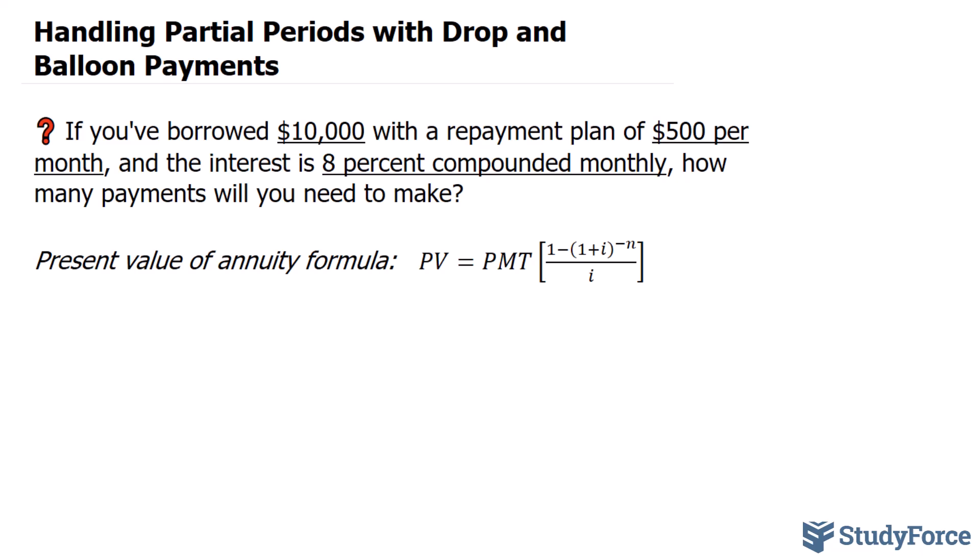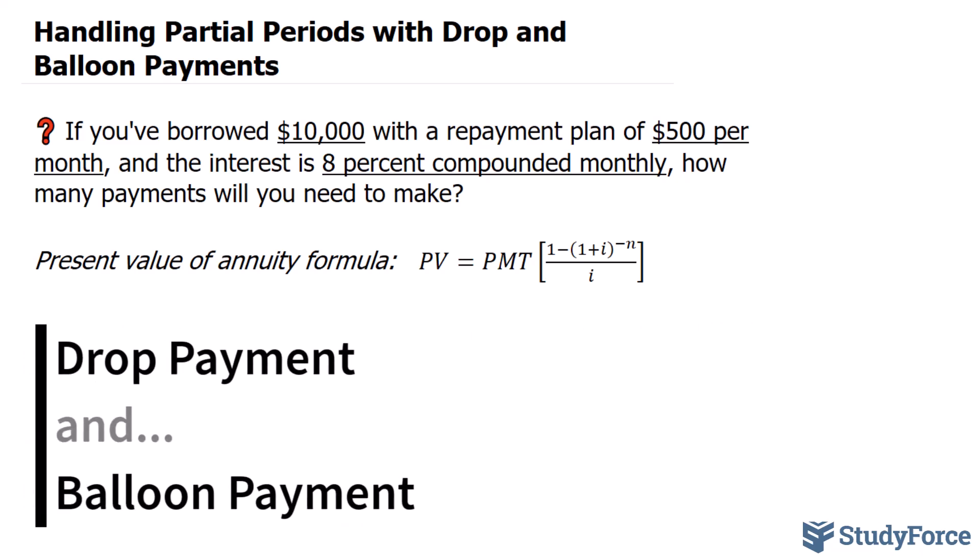In this lesson, we look at how to handle the final annuity payment in the presence of partial periods. There are two main methods: the first one is called a drop payment, and the second one is a balloon payment.